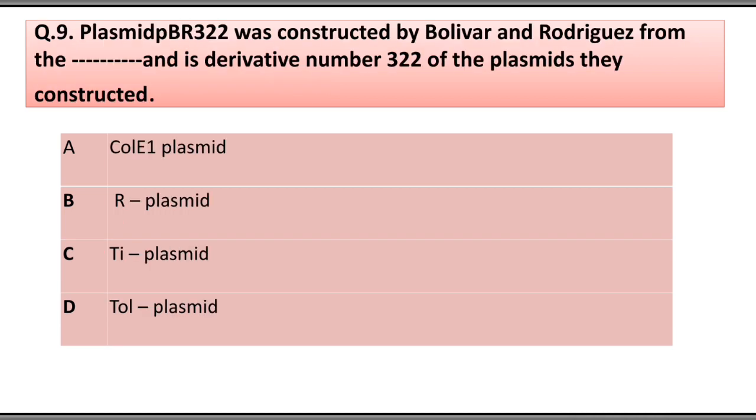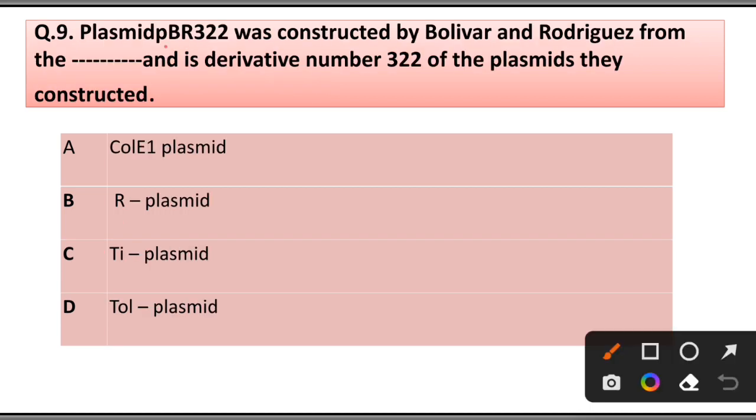Question number 9: Plasmid pBR322 was constructed by Bolivar and Rodriguez from the derivatives of the plasmid. Number 322 is of the plasmid they constructed: A) ColE1 plasmid, B) R plasmid, C) Ti plasmid, D) TOL plasmid. Answer is option A, ColE1 plasmid.